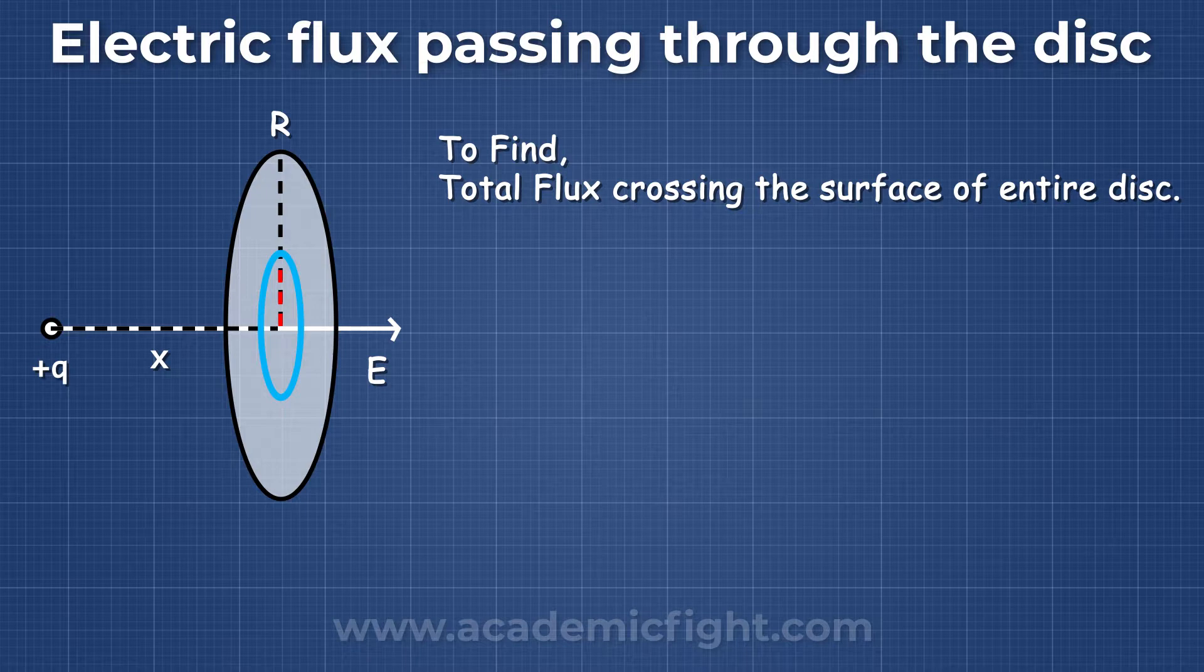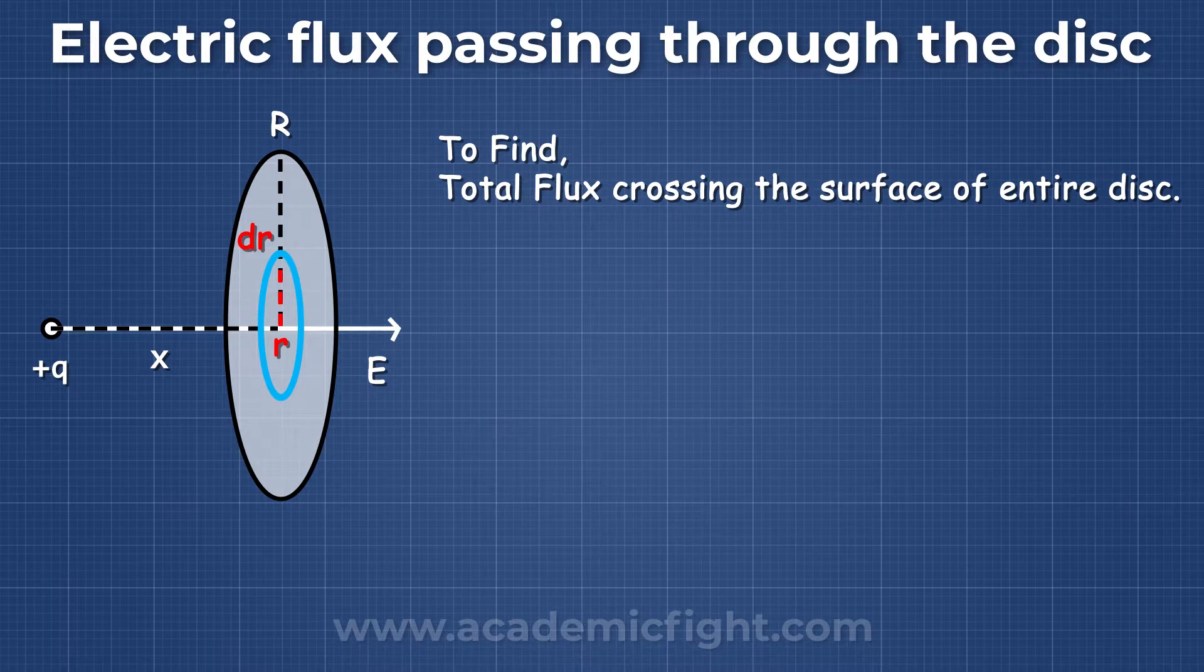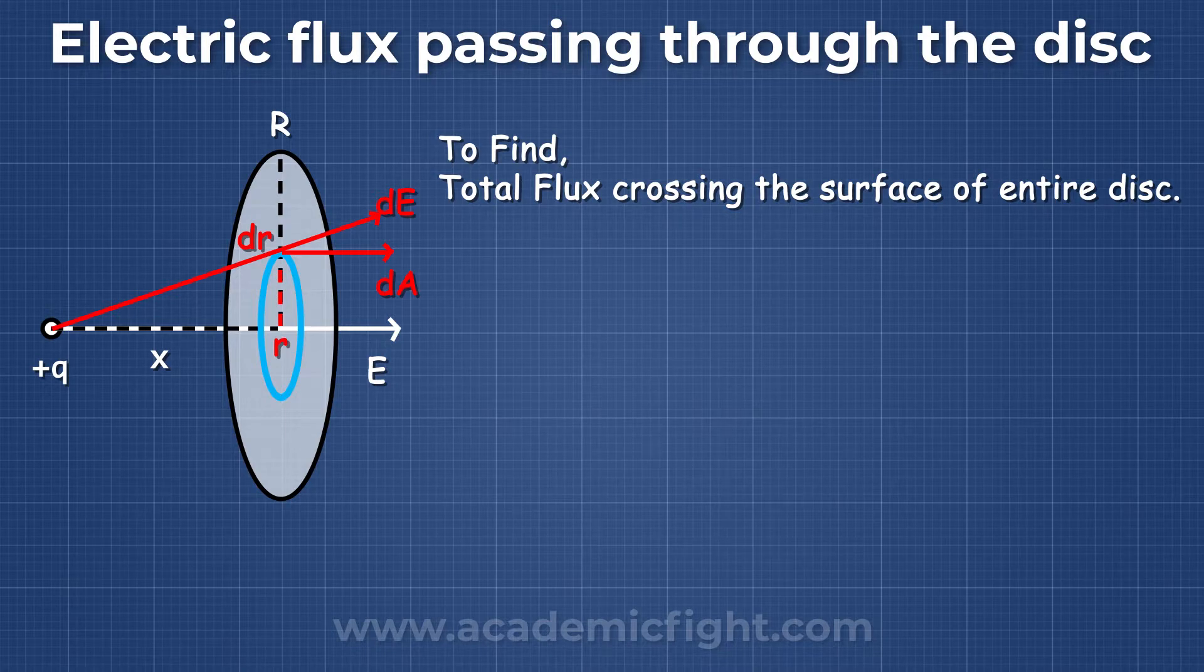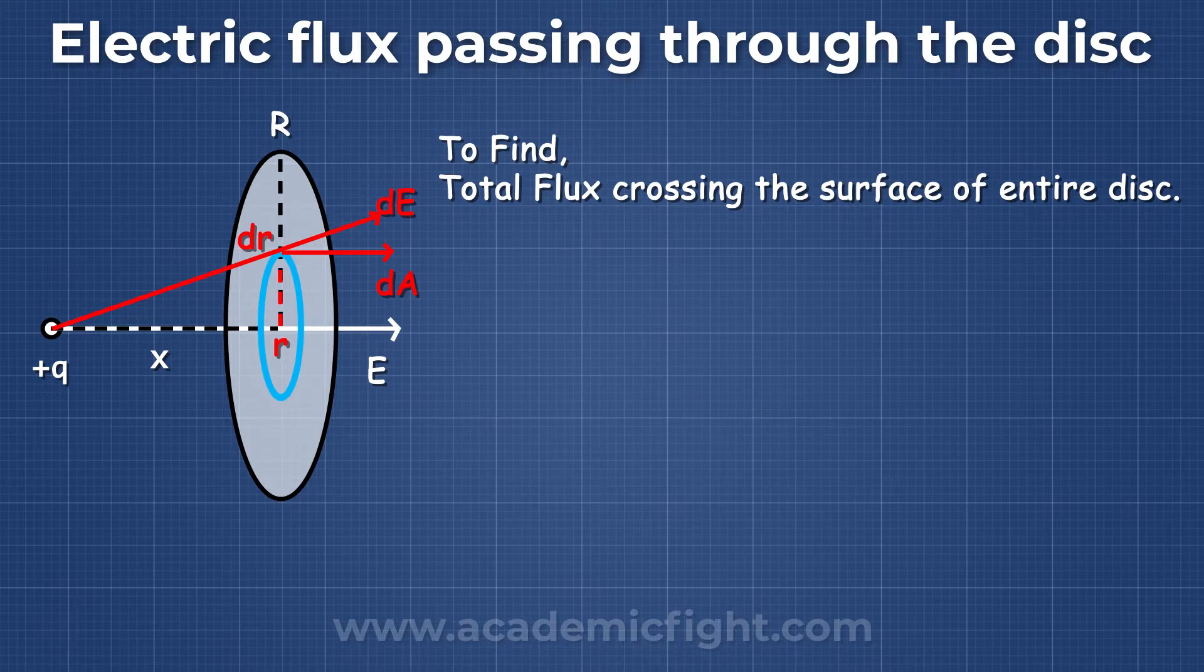Let's say the radius of the ring is small r, and the width of the ring is dr, and the area of the disc is dA. Now the electric field passing through the ring is dE, and the area vector will be perpendicular to the ring. Let's say the angle between the electric field vector and area vector is alpha.